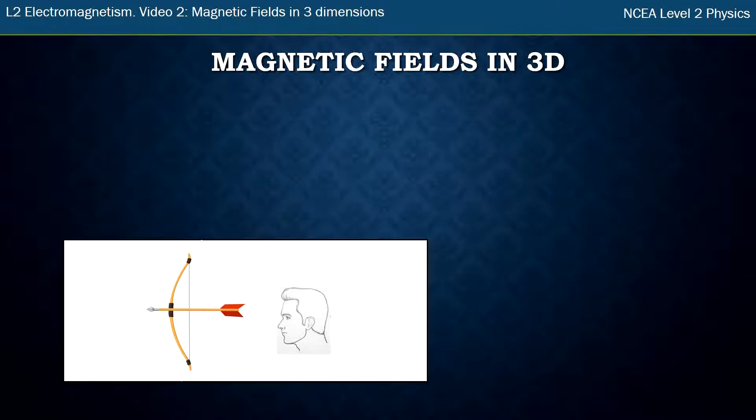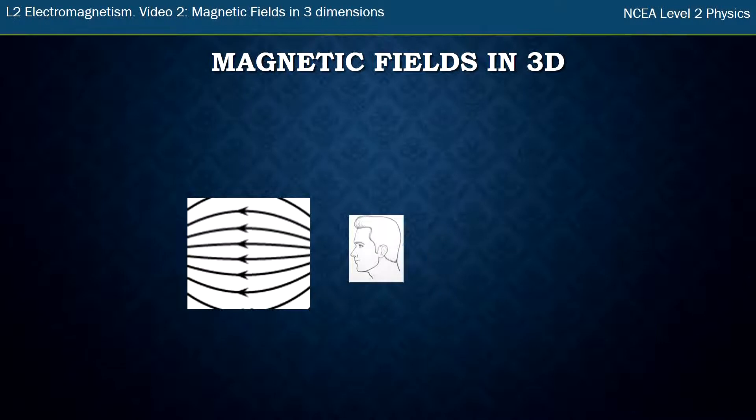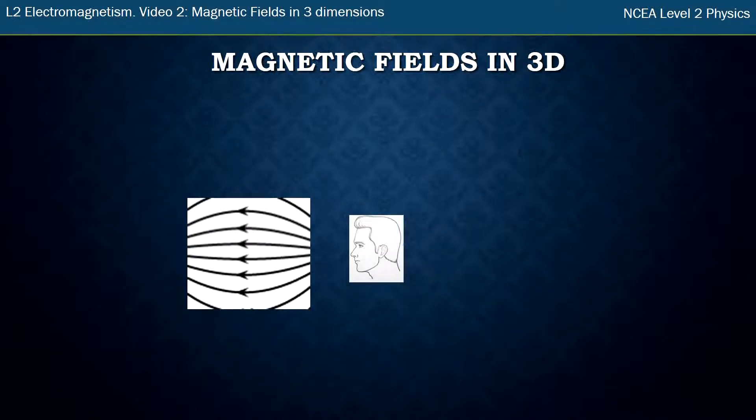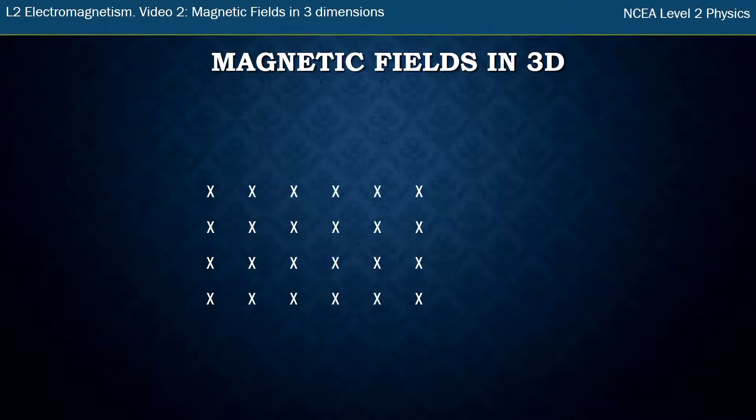Here we have a bow and arrow notation. If you see an arrow moving away from you, the last thing you see is the feathers at the end, and so we symbolize that with a cross. Anything that's moving away from you is a cross because that's kind of what the shape of the feathers are. So this person sees their magnetic field lines moving away from them, he sees a bunch of crosses. That's how we draw it.